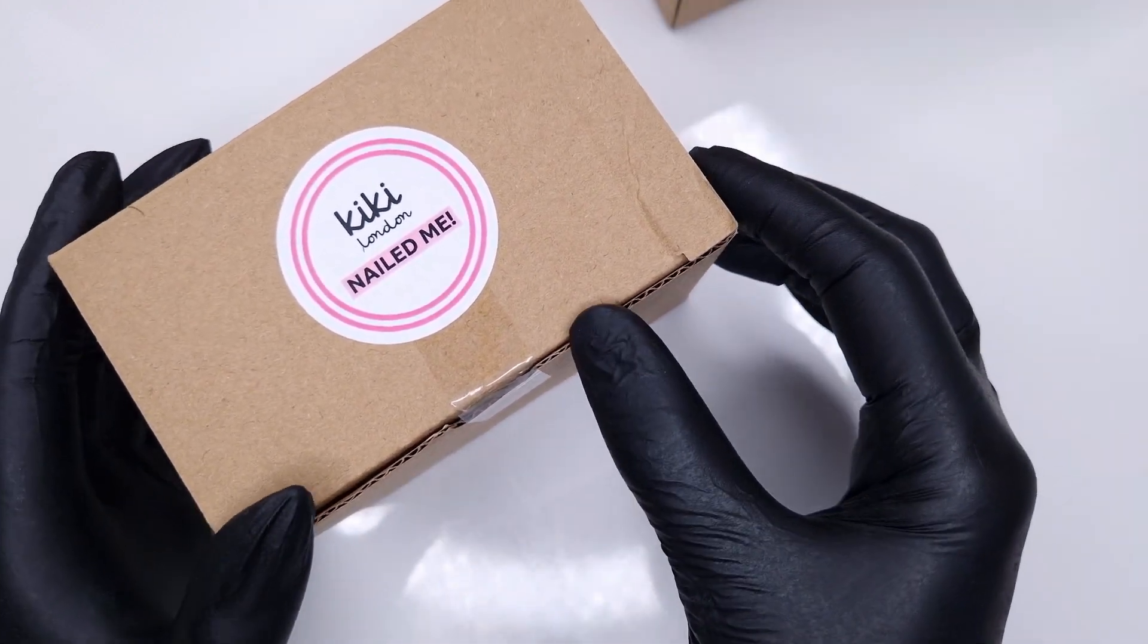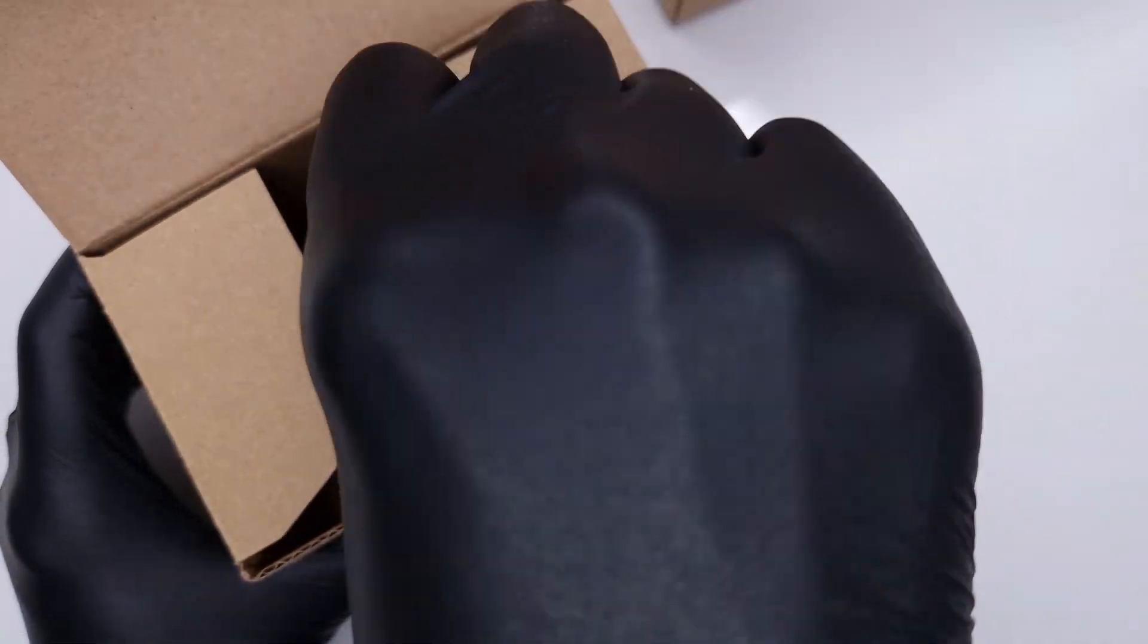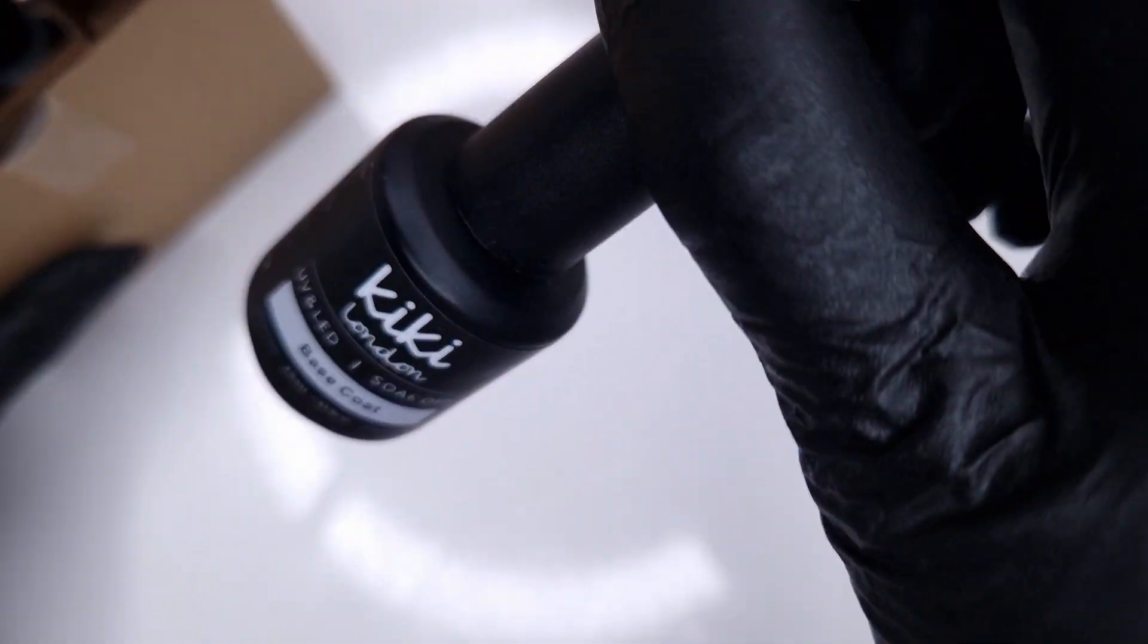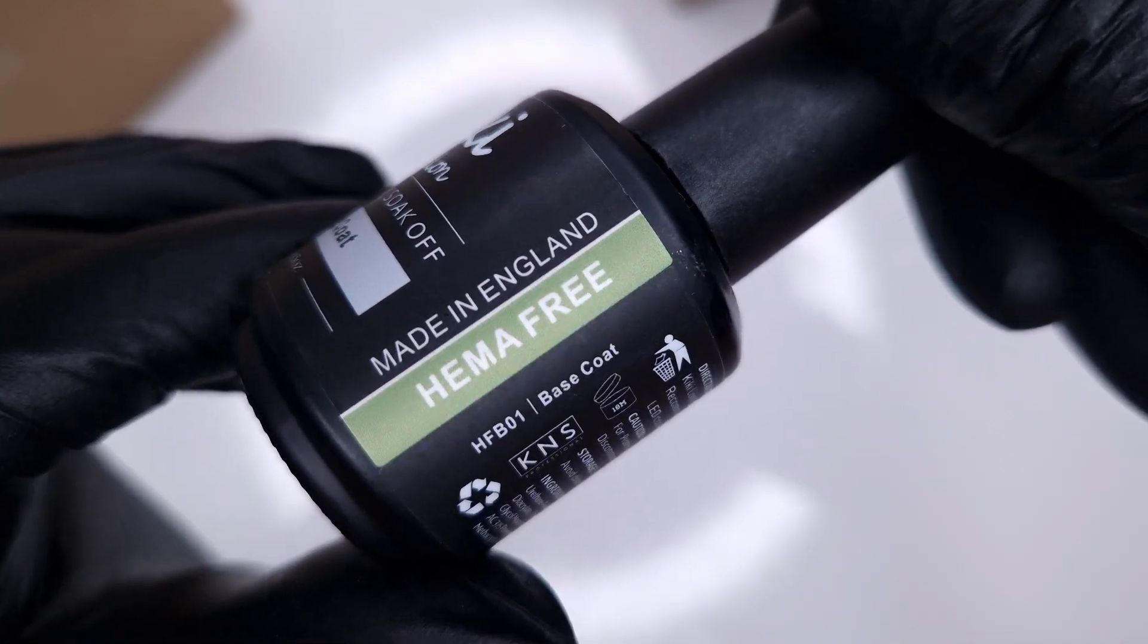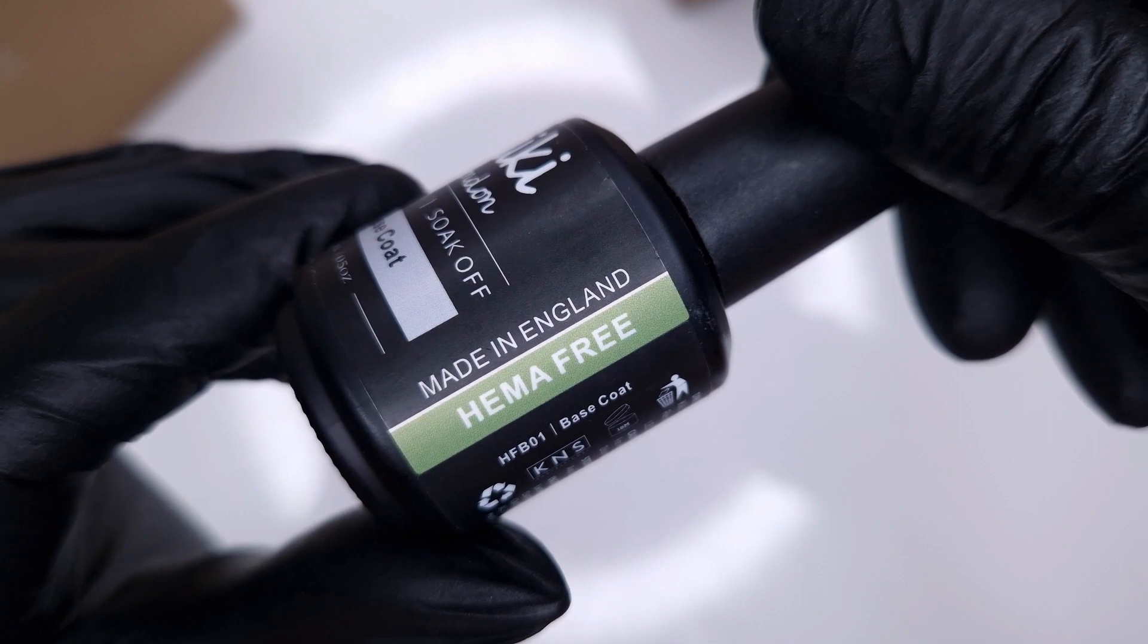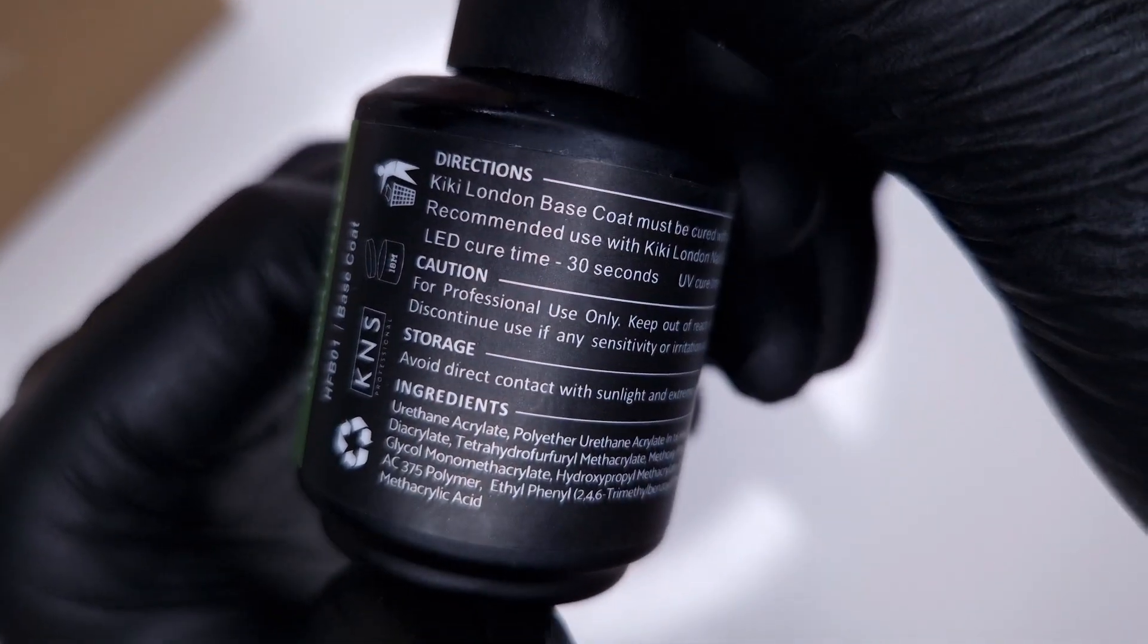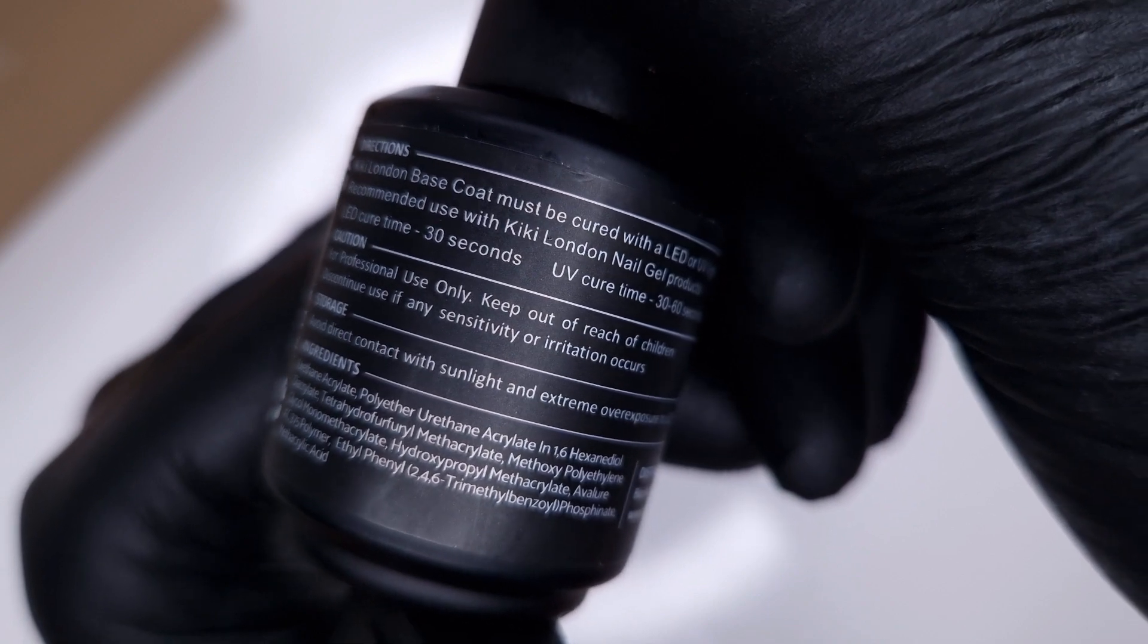As you can see here I have two boxes as the Hema Free range launches as its full own line. So we're going to start off by looking at the base coat. The bottles are very similar to your regular Kiki London bottles but here on the side they have a strip telling you that they are Hema Free and that they're also made here in the UK.